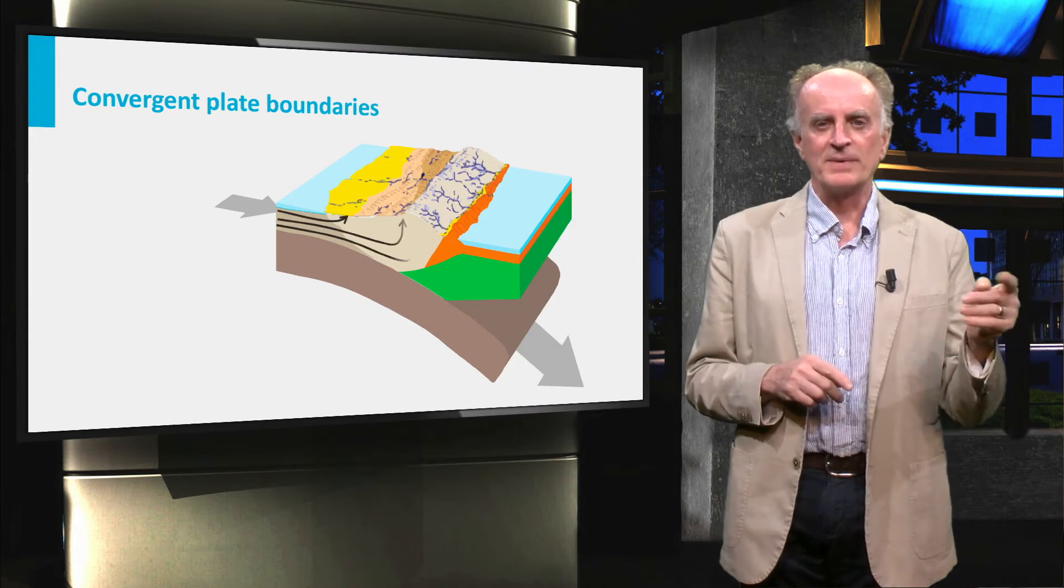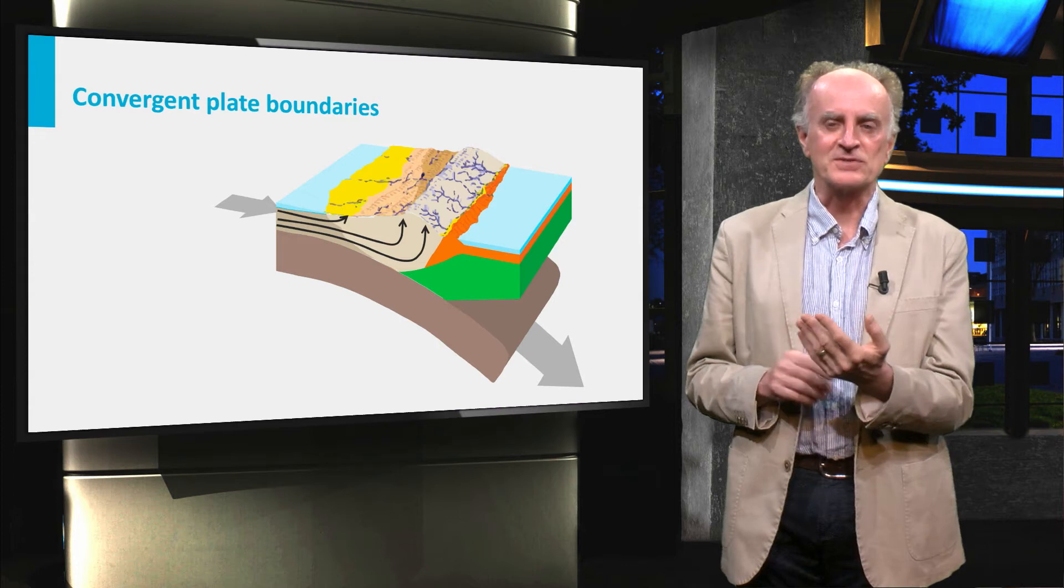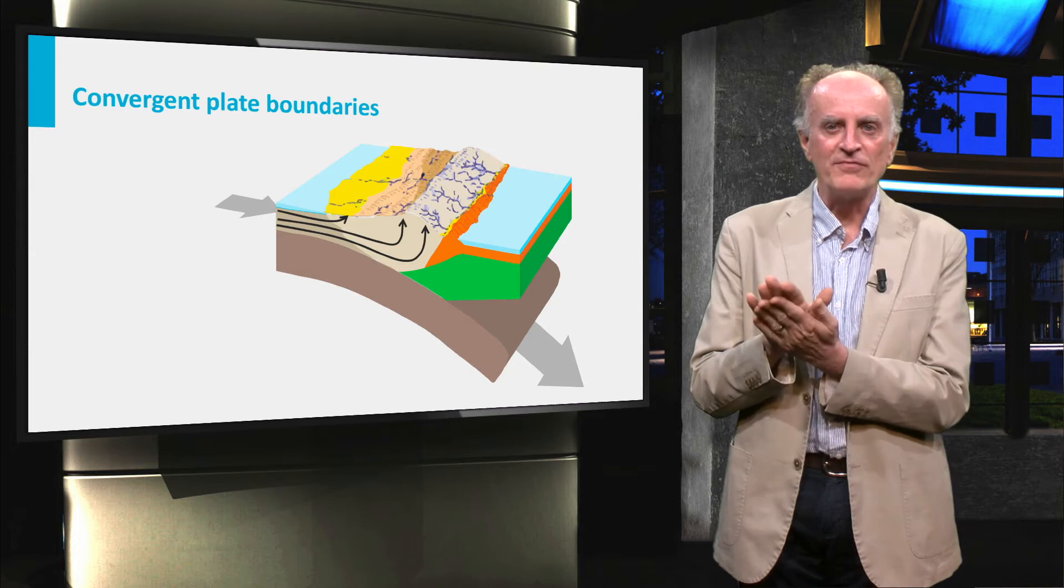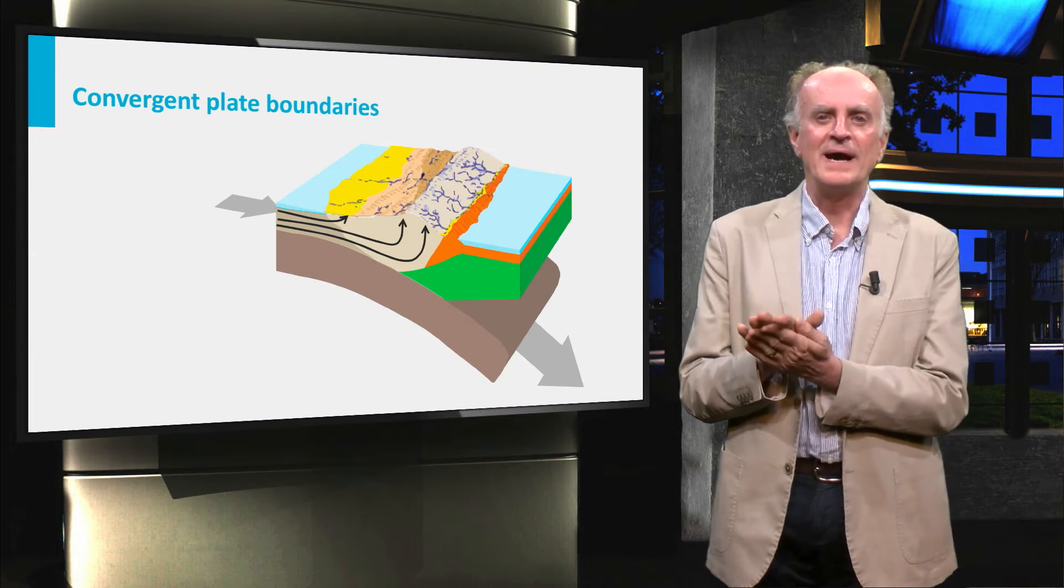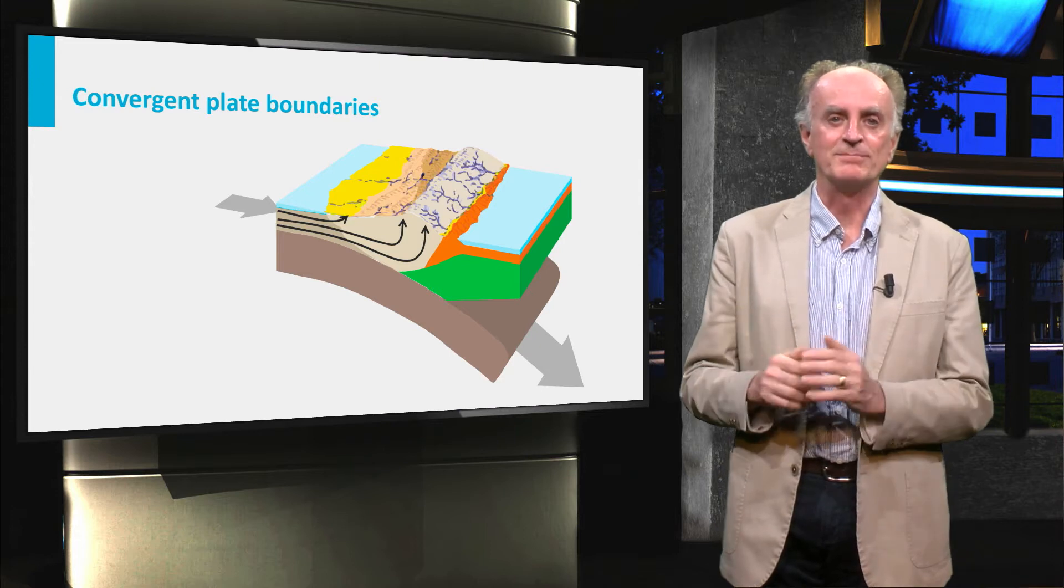Rocks of the lower plate are brought towards the convergent zone, indeed an area of strong friction and deformation. Rocks would then be scraped off from the lower plate, piled up, forming an accretionary wedge. A mountain is born.